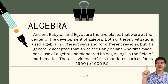Here's the origin of algebra. Ancient Babylon and Egypt are the two places that were at the center of the development of algebra. Both of these civilizations used algebra in different ways and for different reasons, but it's generally accepted that it was the Babylonians who first made basic use of algebra and pioneered its beginning in the field of mathematics. There is evidence of this that dates back as far as 1900s to 1600s BC.